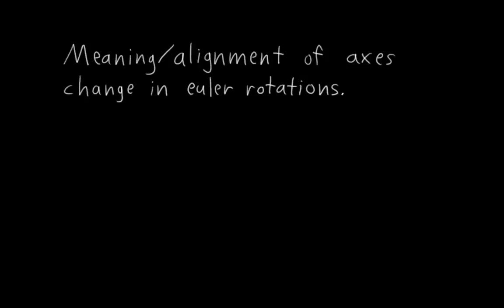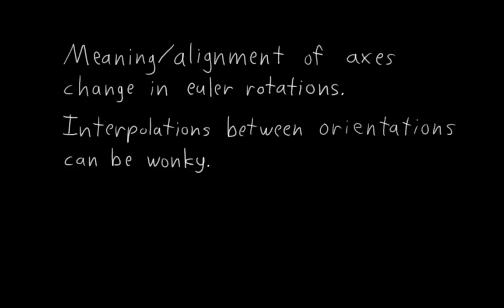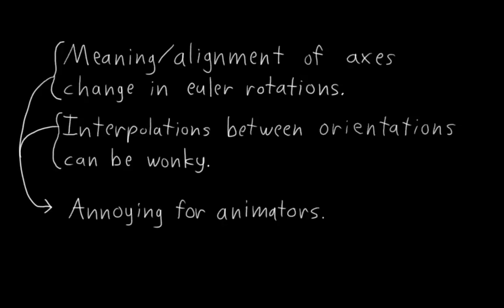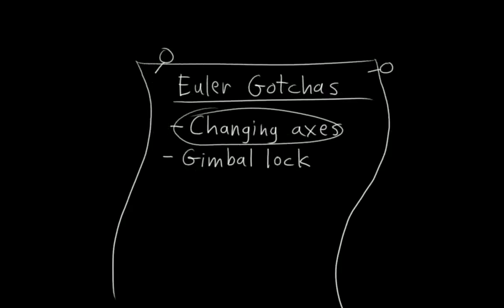And these changing axes also mean that interpolation between different orientations can be kind of wonky sometimes, which can be annoying for animators to deal with. So that's the first gotcha. The second gotcha, which I mentioned briefly before, is a direct result of the first gotcha. It's called Gimbal Lock.